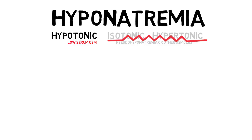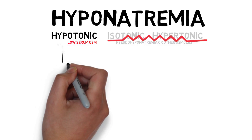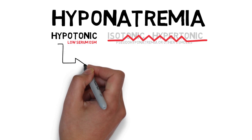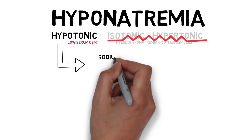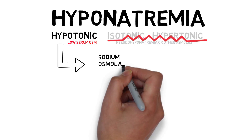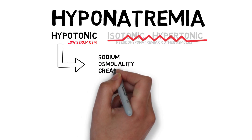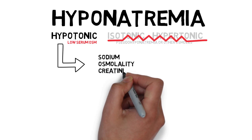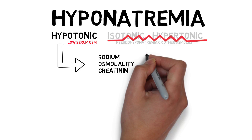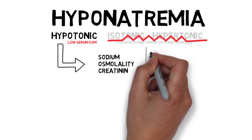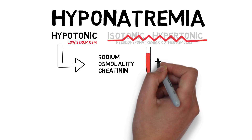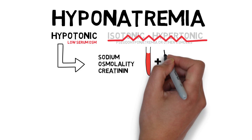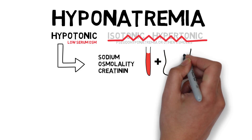Hypotonic hyponatremia can easily be systematically evaluated by taking into account the effect of the RAS and the ADH system on urine. For the analysis of hyponatremia, the very least you need to know is the serum sodium, osmolality, and creatinine, as well as the urine sodium, osmolality, and creatinine.